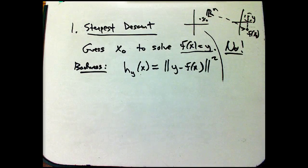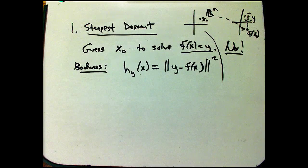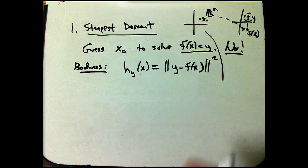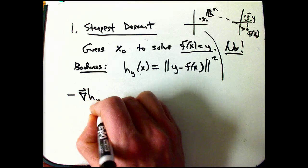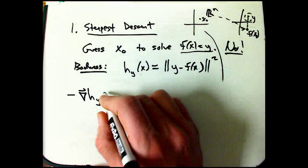But we can at least look at, if we do follow the gradient, what is the gradient of this guy? Well, we want to go opposite the gradient, minus the gradient of h_y.